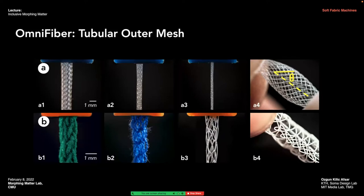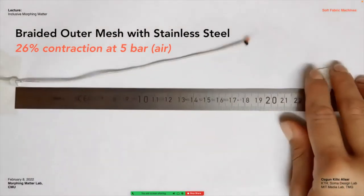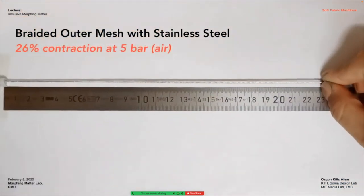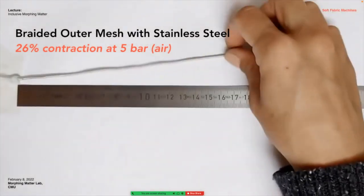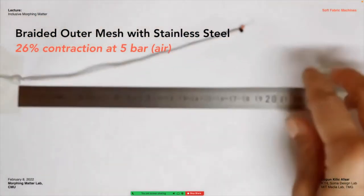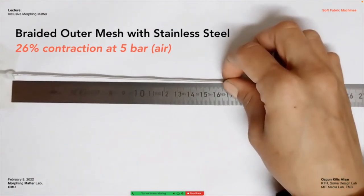Regarding the outer mesh: our work mainly focused on the effects of the braided outer mesh — the number of filaments and braiding angle, as seen in figures A1 through A4. It is also possible to utilize tubular knitting directly onto the elastomeric tubing, as shown in figure B; however, an actuator with a tubular mesh provides a smaller contraction ratio of about 15% based on our initial results. Yarns with different mechanical properties may also be explored — for example, a stainless steel monofilament tubular braid achieved 26% contraction, slightly lower than nylon monofilaments at the same pressure of 5 bar.